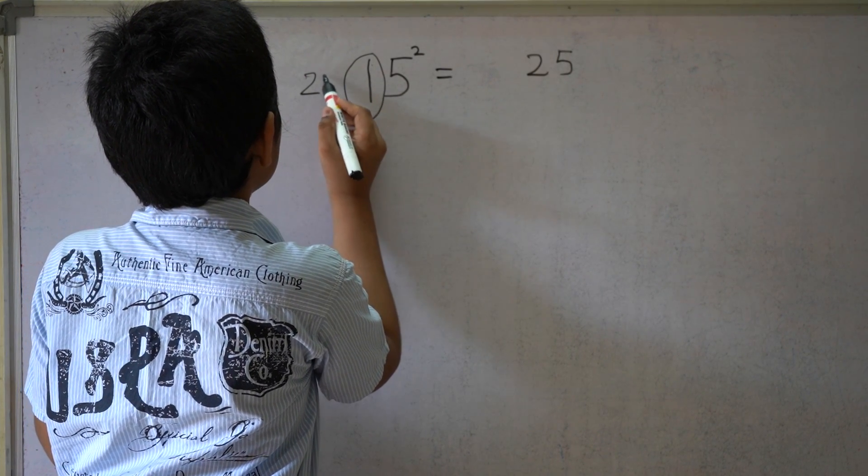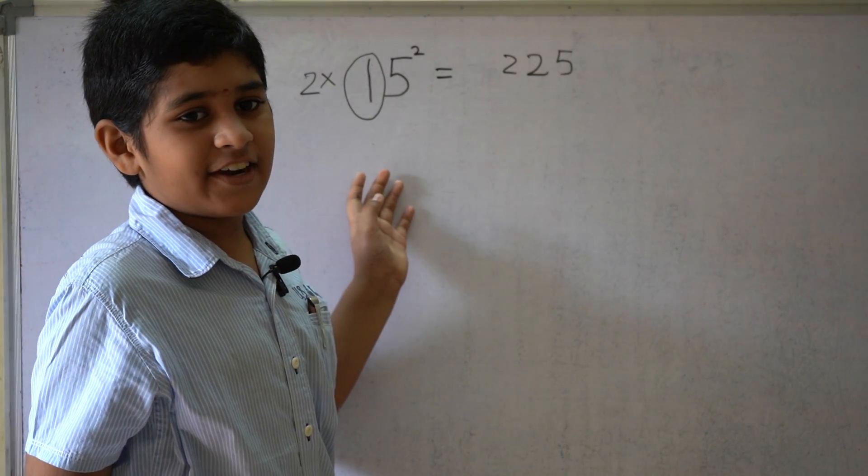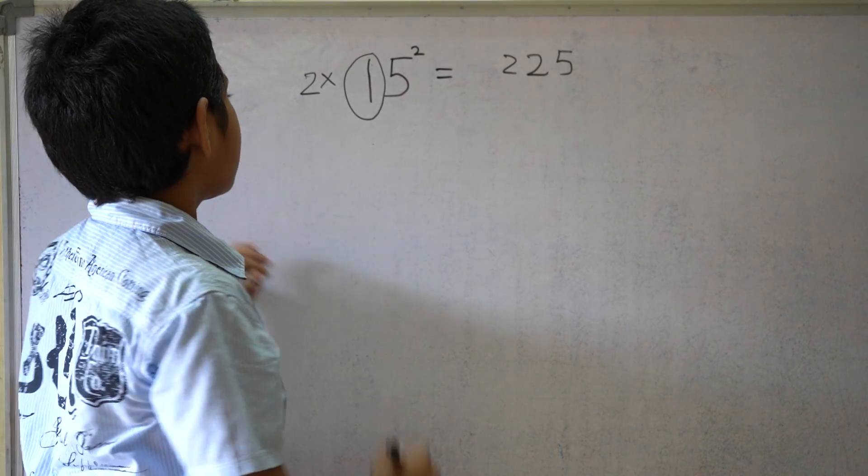1 is the tens digit. 2 times 1 equals 2. So 15 square equals 225. Next.